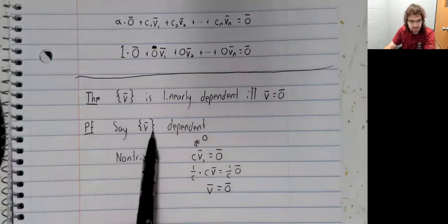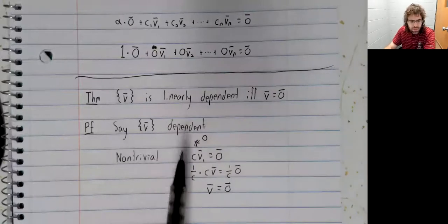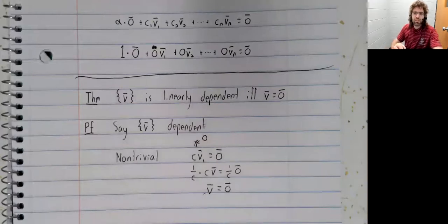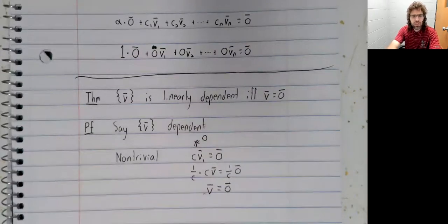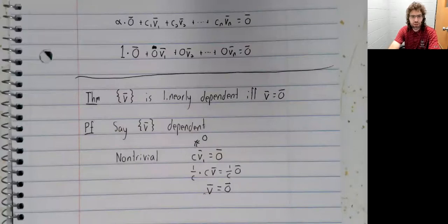If this set is dependent, v is the zero vector. And those are the two theorems that I am going to look at in this video.